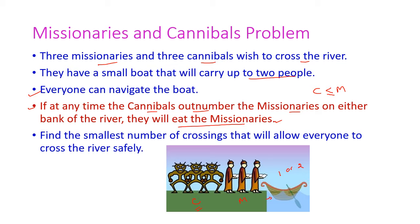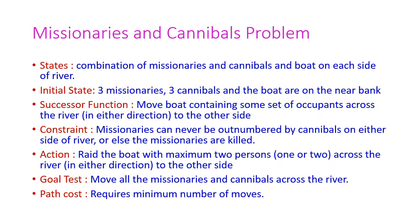With this condition, we have to cross all the missionaries and cannibals to the other side of the bank. We need to find the smallest number of crossings that will allow everyone to cross the river safely. The state is defined as any combination of missionaries and cannibals and the boat on each side of the river, and these are the acceptable or legal states.